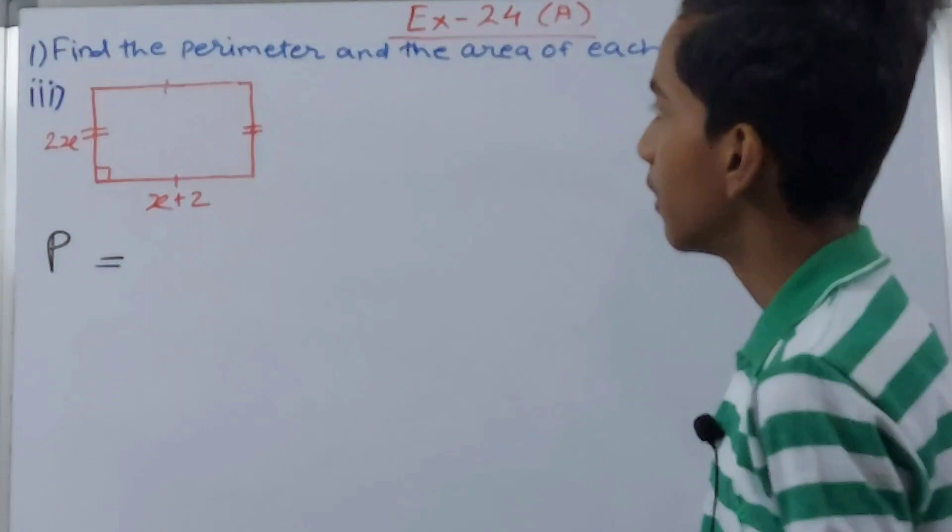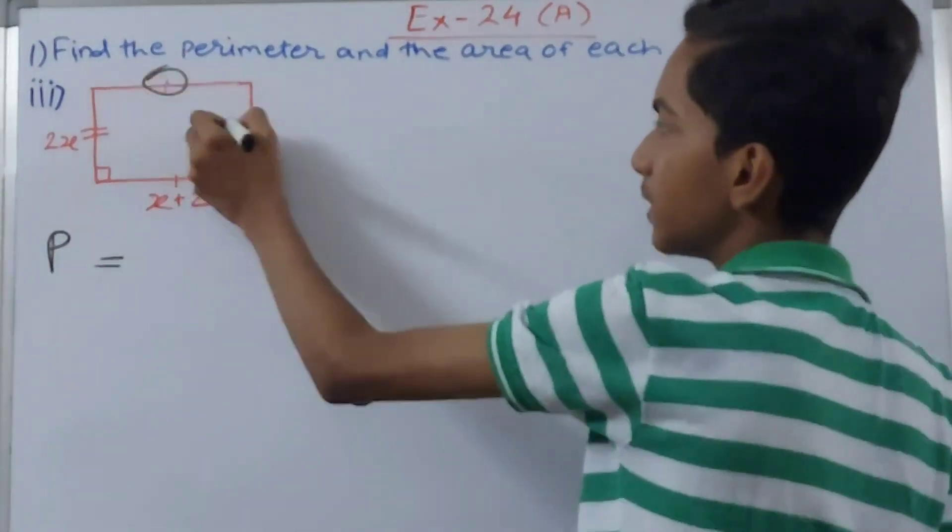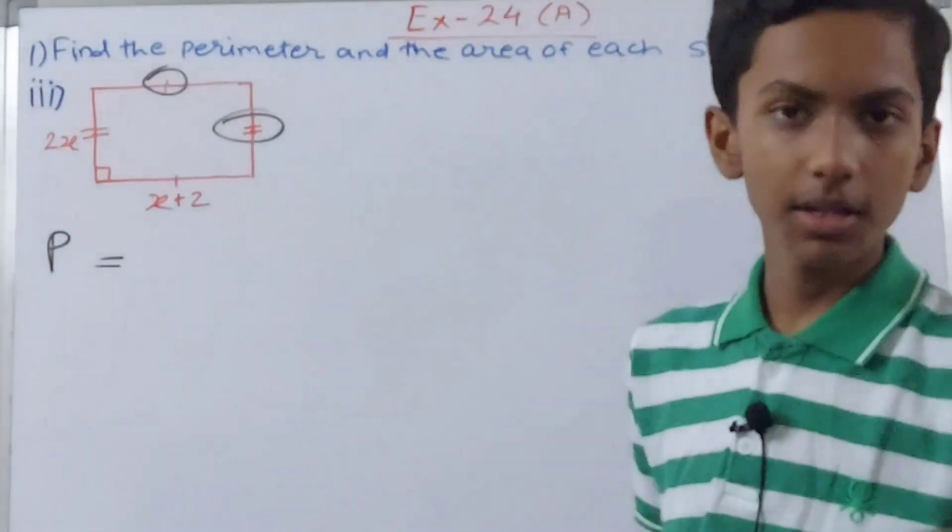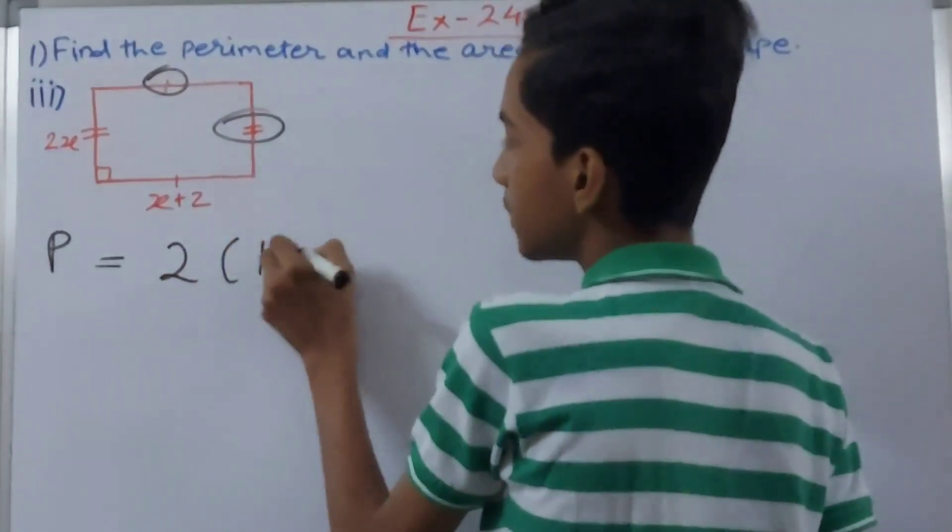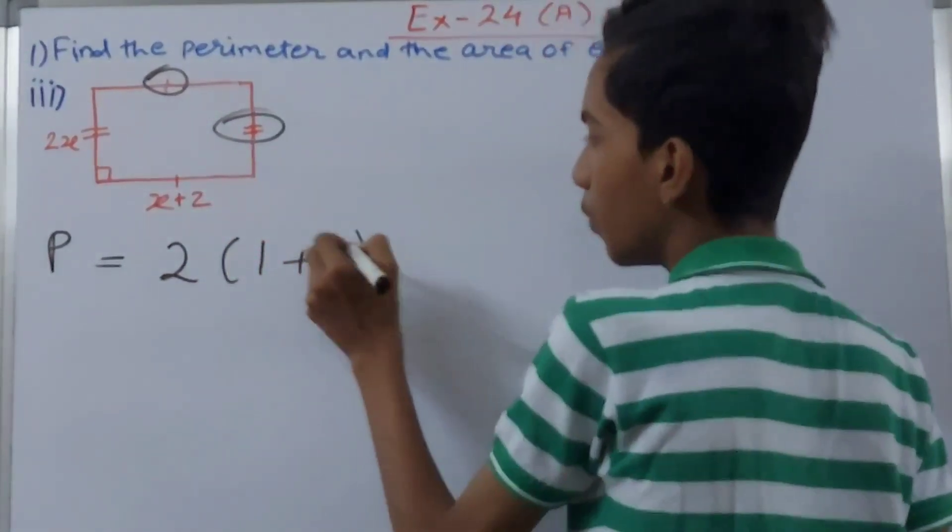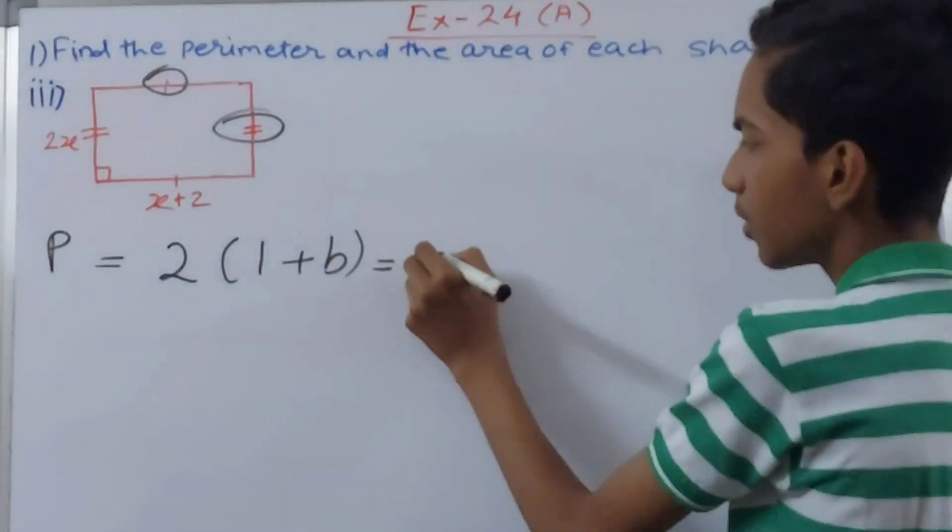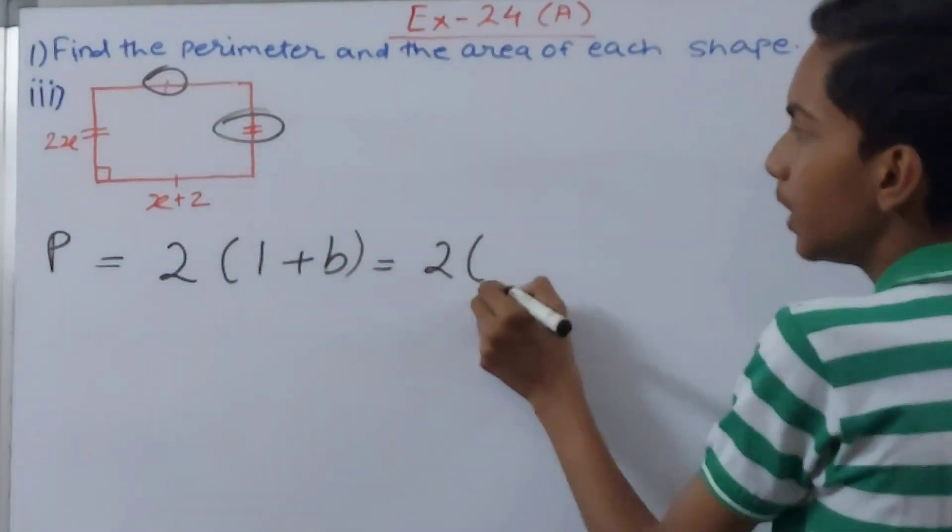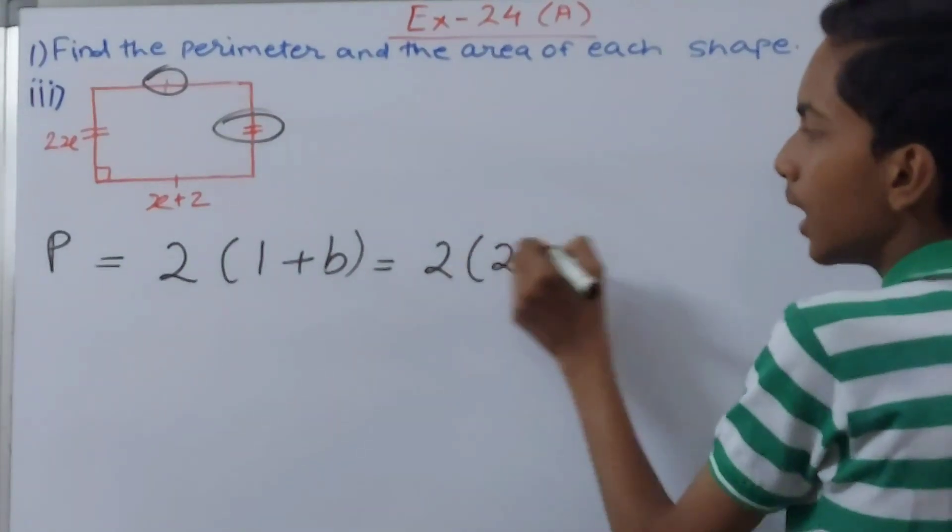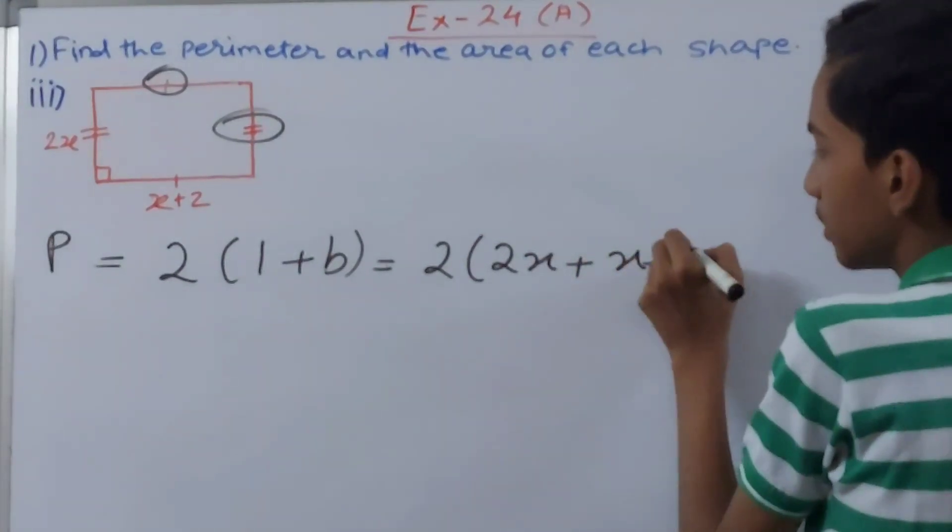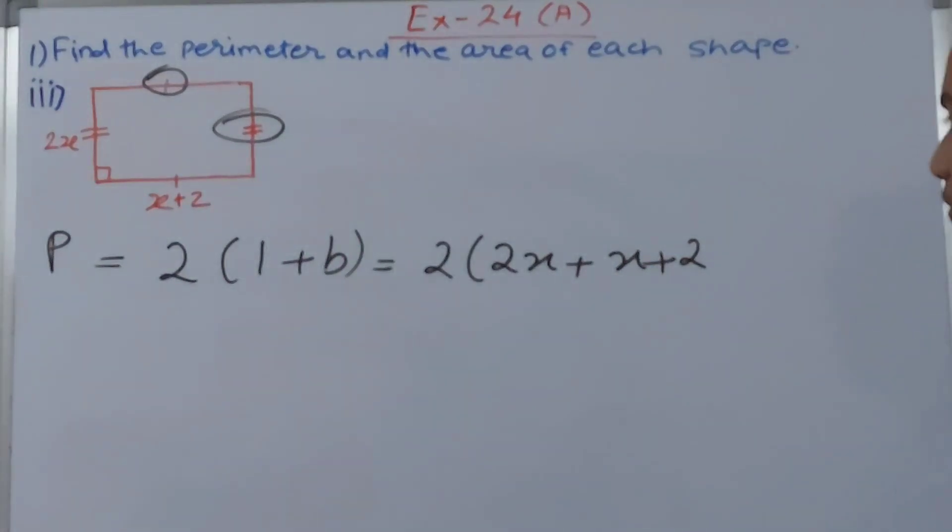Two opposite sides are equal. Now perimeter is 2(l + b). We don't know what is the length, so put them accordingly as you wish. 2 times 2x plus x + 2. This is what it will be, 2x plus x + 2.